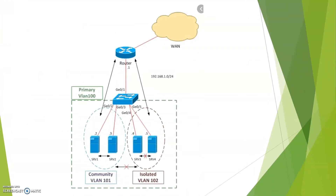This is a private VLAN architecture. I have connected 4 servers to the switch. Two servers are in community VLAN 101, and two servers are connected to isolated VLAN 102. Both the community and the isolated VLANs are collectively called secondary VLANs, and the VLAN connected to the router is called the primary VLAN — that is VLAN 100.